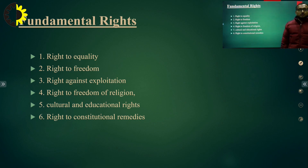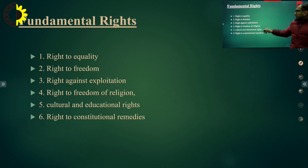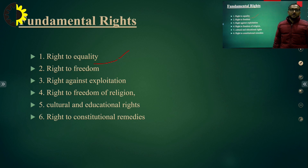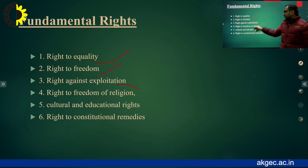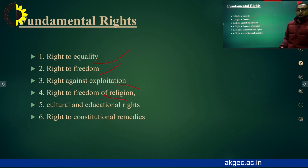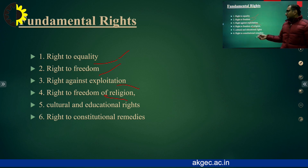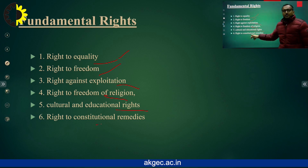There are six fundamental rights defined in the constitution. First is the right to equality — every citizen of India has equal rights. Second is the right to freedom. Third is the right against exploitation. Fourth is the right to freedom of religion — every person is free to choose their own religion. Fifth is cultural and educational rights. Sixth is the right to constitutional remedies.